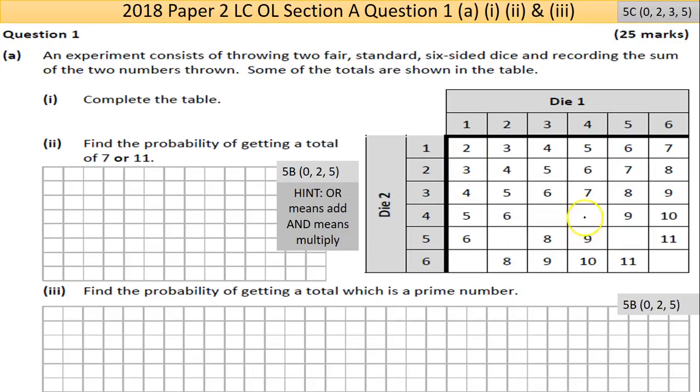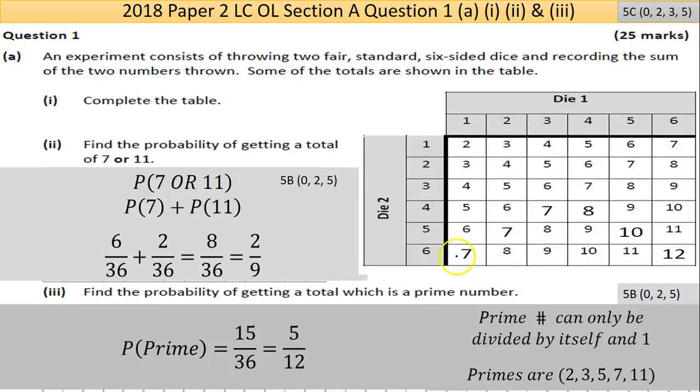So every single possibility is accounted for or will be accounted for in this sample space here. So if we fill in the table, it's pretty handy if you think about the six and one was thrown, you get seven here. The next one then will be five and two would give you seven. Four and three would also give you seven. Then four and four would give you eight. Five and five would give you the ten here. And lastly six and six will give you twelve.